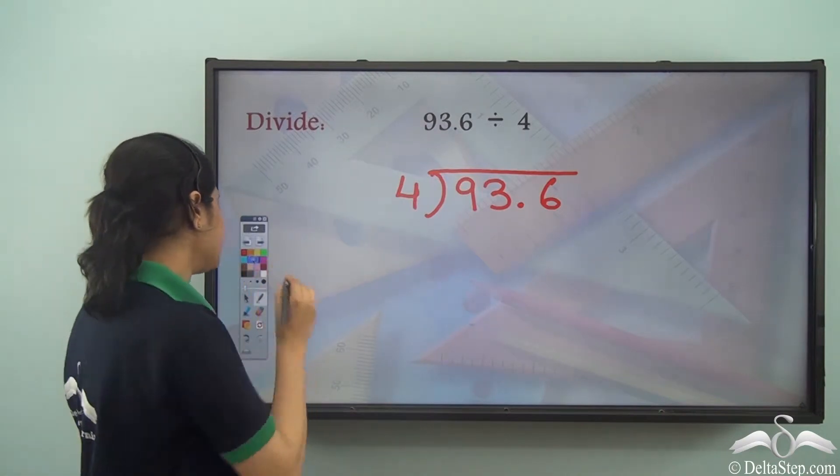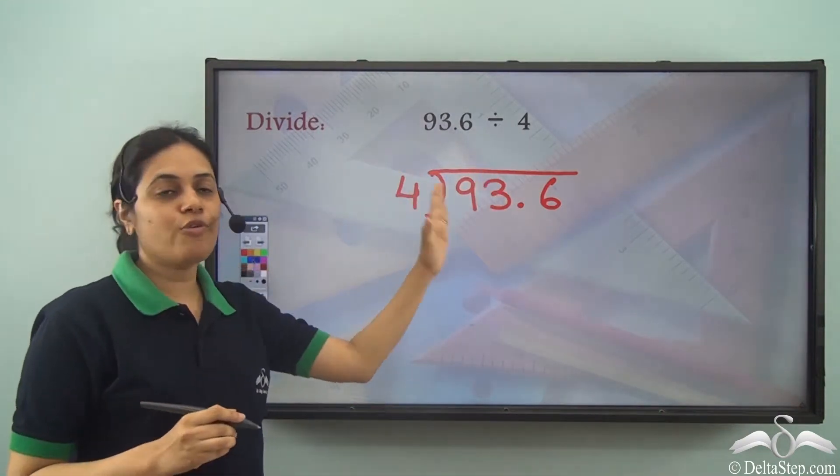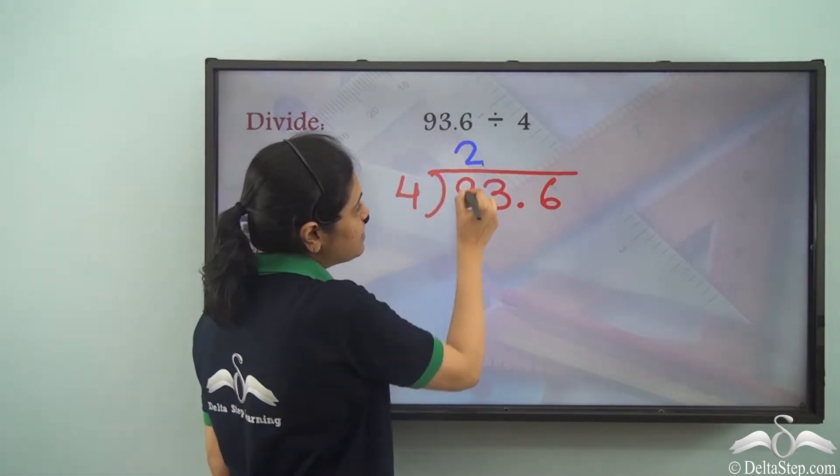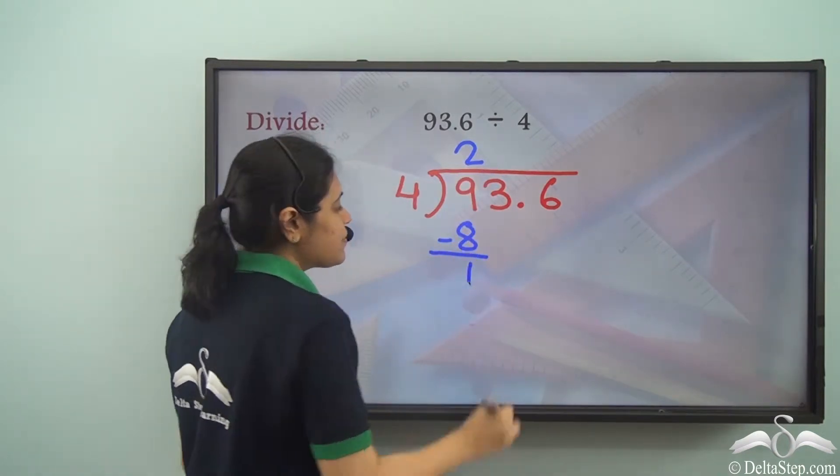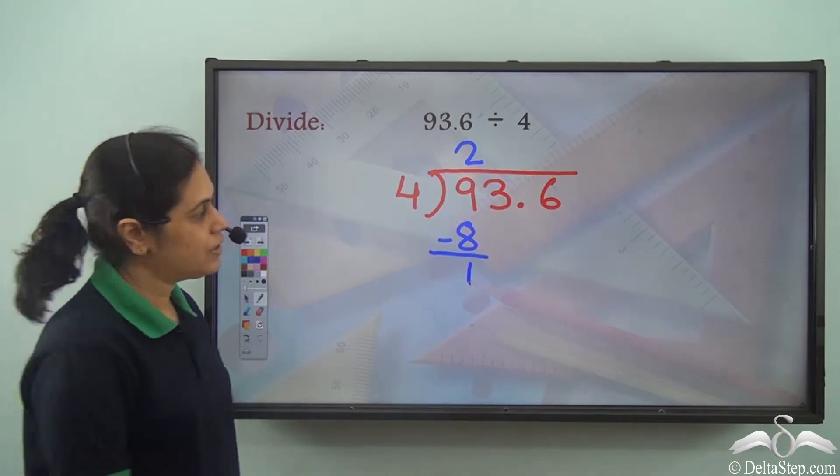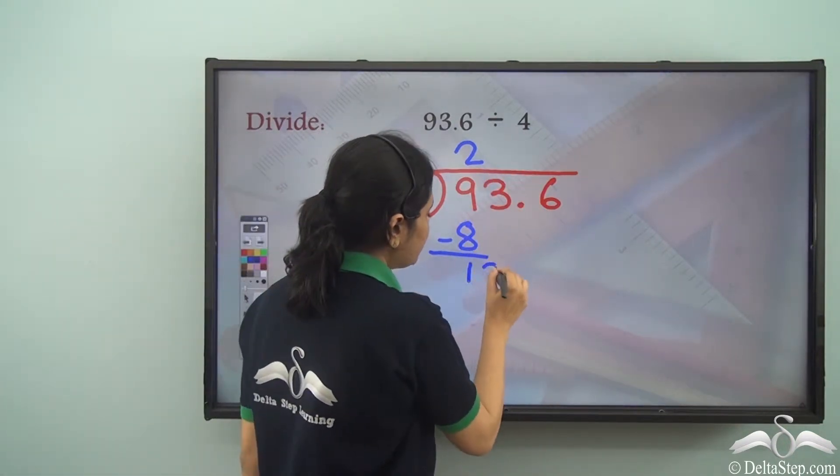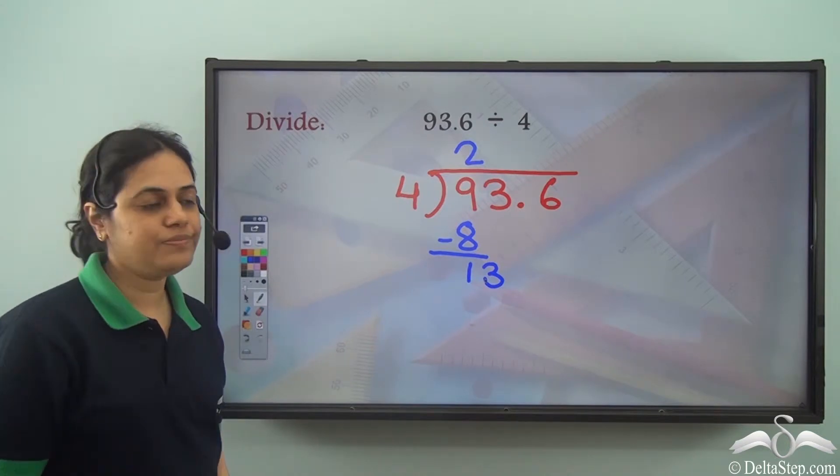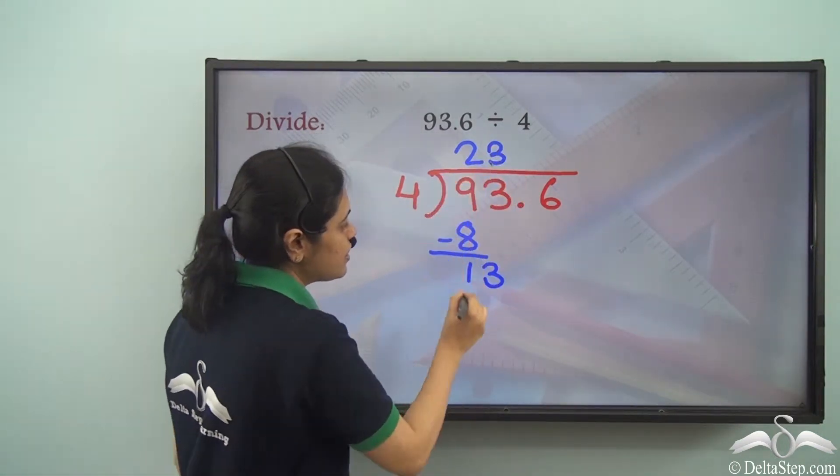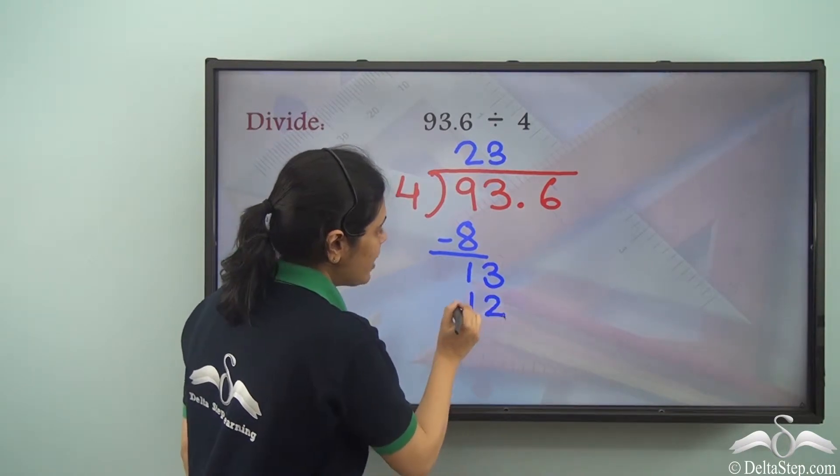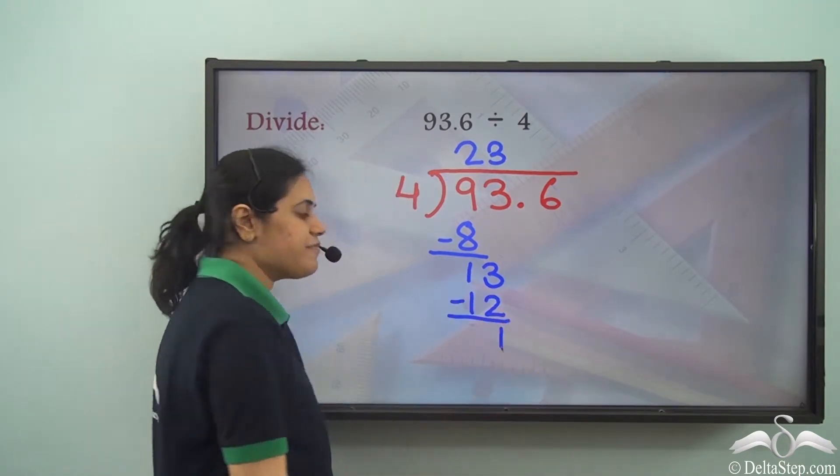So first I consider 9. Now 4 goes into 9 two times. 2 into 4 is 8 and I subtract it to get 1. Then we bring down 3. We have 13. Now 4 goes into 13 three times. 3 into 4 is 12 and I have 1.